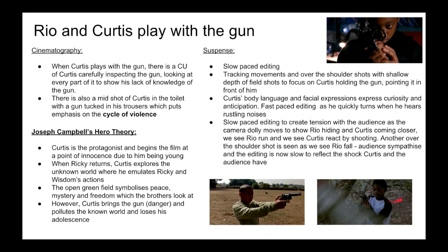There is slow-paced editing when they are in the forest, with tracking movements and over-the-shoulder shots with shallow depth-of-field to focus on Curtis holding the gun, showing he is nervous. Curtis's body language and facial expressions express curiosity and anticipation as he searches for Rio. There is also fast-paced editing as he quickly turns when he hears rustling noises — we see Rio running past and then Curtis immediately shoots. There is slow-paced editing when Rio falls to the floor to create tension and provoke shock with the audience, as a camera dolly moves to show Rio hiding and Curtis coming closer.